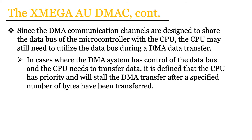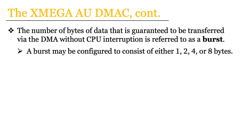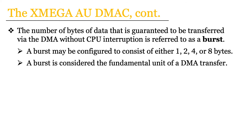It turns out that it is defined that the CPU has priority in these cases, and after some specific number of bytes have been transferred for the DMA transfer, the CPU will intervene and take over the data bus. This number of bytes guaranteed to be transferred via the DMA before CPU intervention is even possible is referred to as a burst in XMega AU documentation. Specifically, a burst may be configured to consist of either one, two, four, or eight bytes, and in general a burst is considered to be the fundamental unit of a DMA transfer.